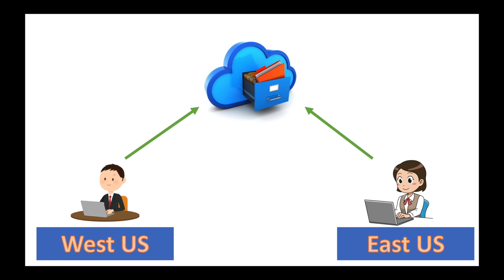What I want to show you is in the Firewalls and Networking section, we're able to define who can log into our resources and from what network. I'm going to log into both virtual machines and show that we can access the Azure portal and connect to the file share from both. Then later, we'll remove one of those networks from the firewall settings to only allow access from the West US location.